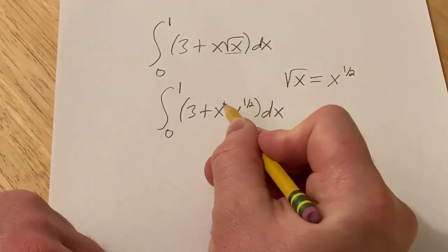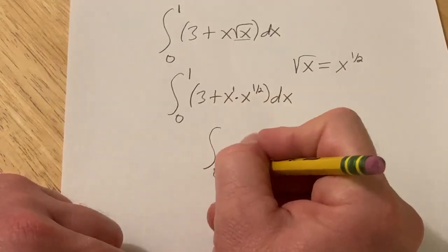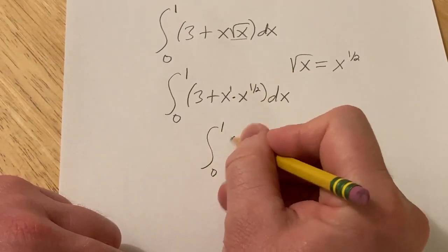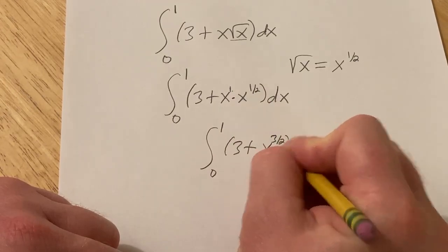Now we have to combine these. There's a 1 here, and because the bases are the same you basically add the exponents. So this is the integral from 0 to 1 of 3 plus—since 1 plus 1/2 is 3/2—x to the 3/2 dx, and now we're ready to integrate.